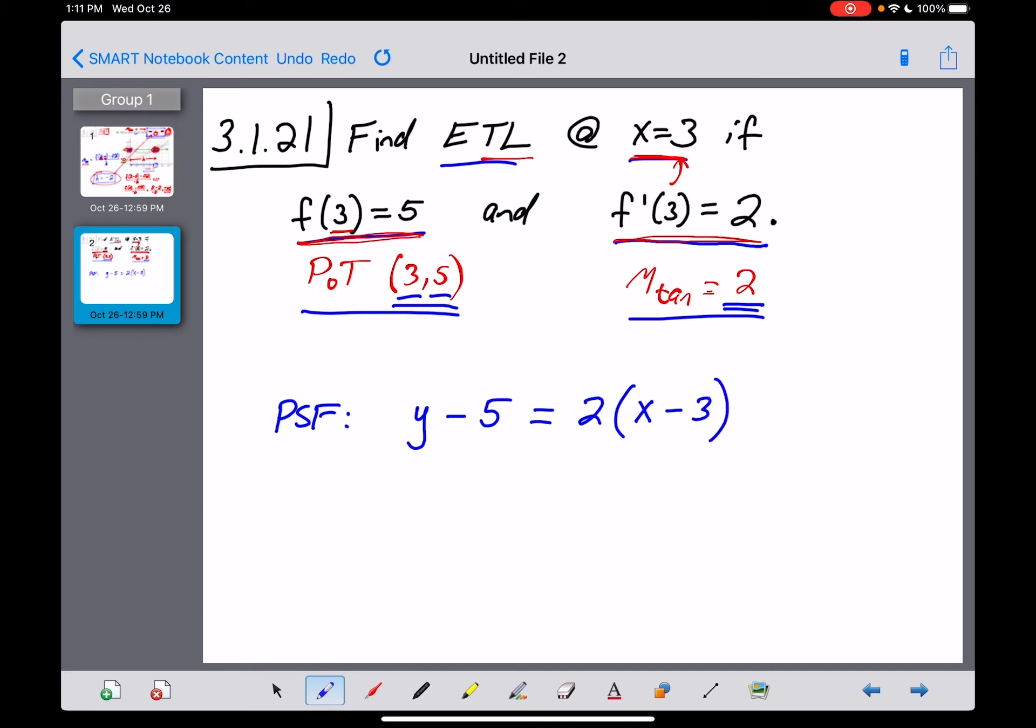So there's the equation of that tangent line in point-slope form. And as I'm looking at number 21 right here, there is a problem with the way your book writes their directions. All it says, I'm reading it right now, find an equation of the tangent line at x equals 3.